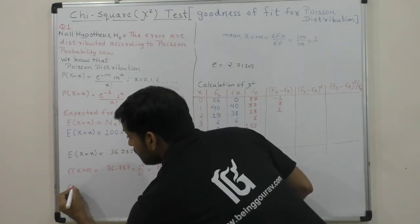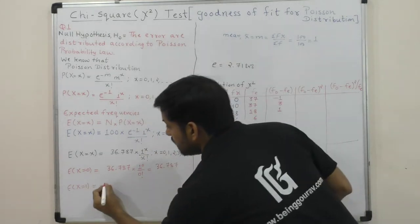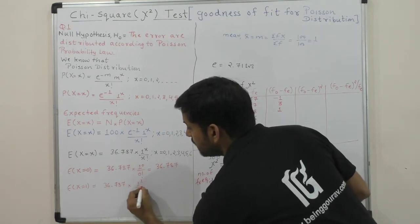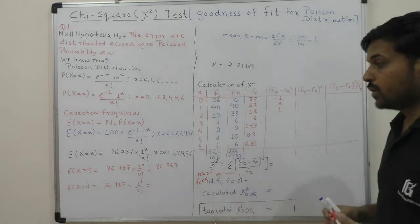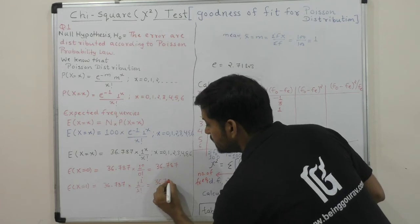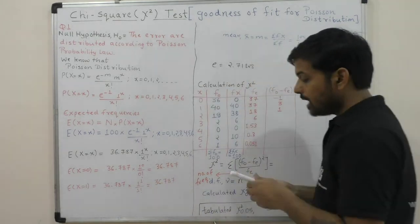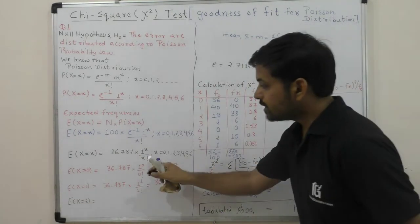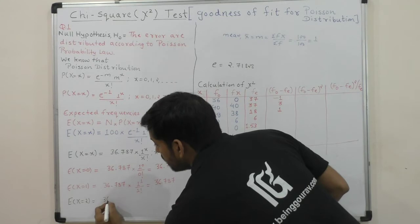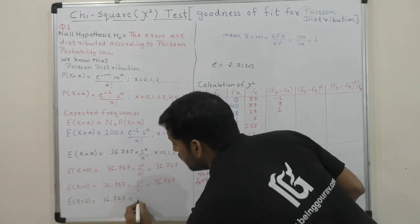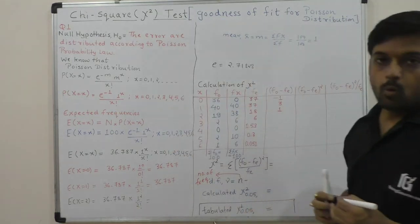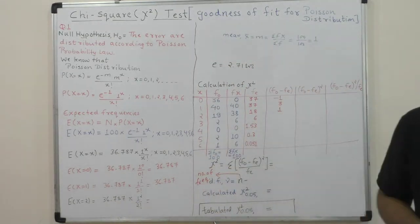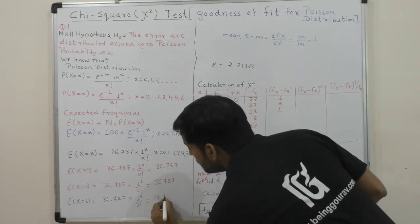For x=1, I have expected frequency: 36.787 multiplied by 1 to the power 1 divided by 1 factorial. Since 1 to the power 1 is 1 and 1 factorial is 1, this value is 36.787. For x=2, we have 36.787 multiplied by 1 to the power 2 upon 2 factorial. Now 2 factorial is 2 and 1 to the power 2 is 1, so dividing 36.787 by 2 gives 18.39.